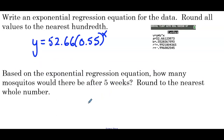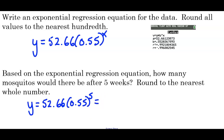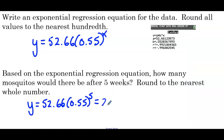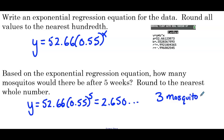Based on the exponential regression equation, how many mosquitoes would there be after five weeks? Round to the nearest whole number. So y equals 52.66 times 0.55 to the 5th. On the calculator: 52.66 times 0.55 to the 5th, hit enter — we get 2.650. Rounding to the nearest whole number, that would be 3 mosquitoes. Our exponential regression equation predicts 3 mosquitoes after five weeks of removing the old pond.